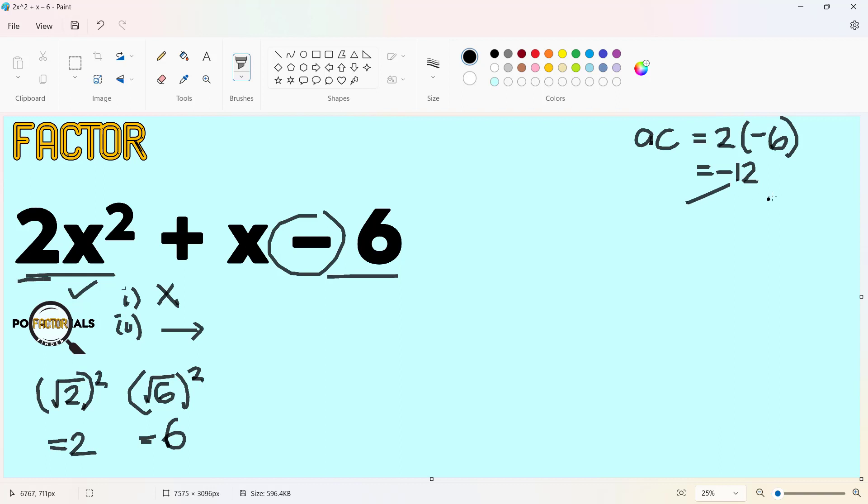AC method now allows us to look for factors of this. We can have 1 and negative 12. You could also have negative 1, positive 12. We could also use 2 and negative 6. We could also have negative 2 and positive 6. We could also use 3 and negative 4, as well as negative 3 and positive 4.